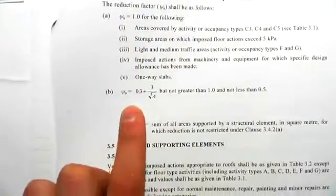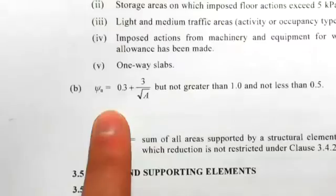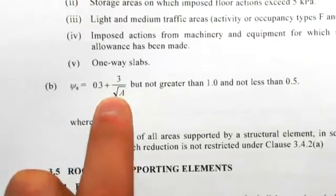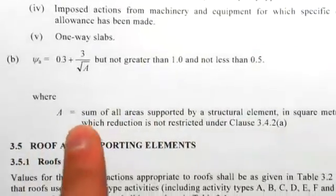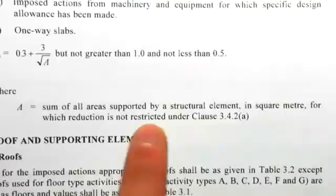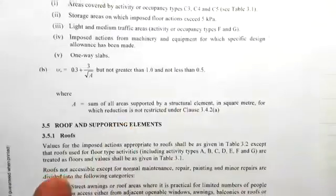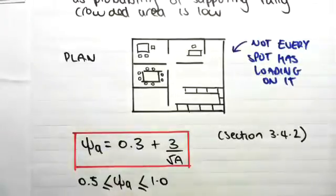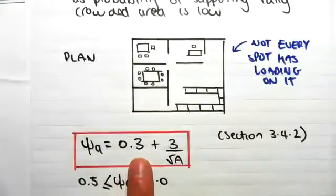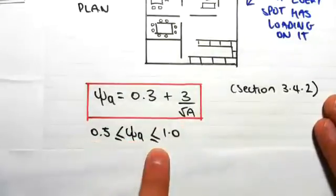We have a formula down here: 0.3 plus 3 on root A, not greater than 1 and not less than 0.5, where A is the sum of all the areas supported by a structural element in square meters. You can read through some of the exceptions to this rule, but just generally speaking, psi A is 0.3 plus 3 on root A, where psi A must be between 0.5 and 1.